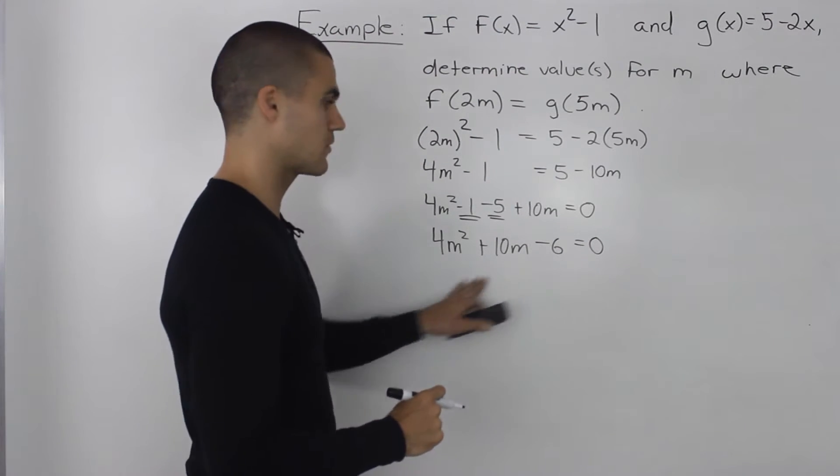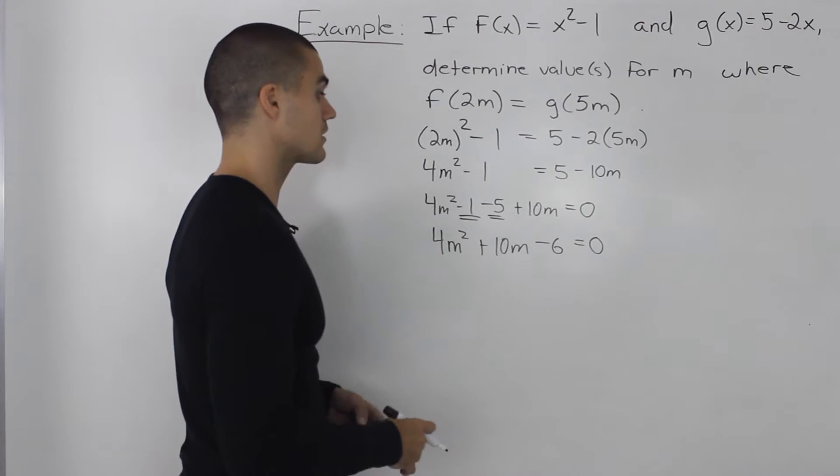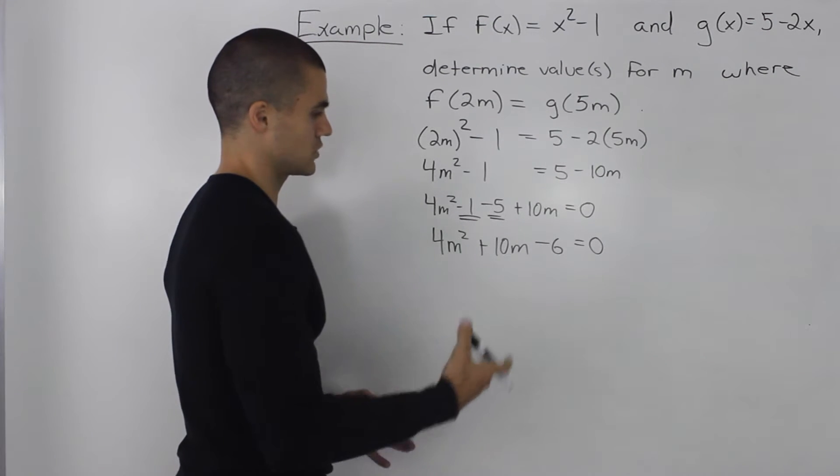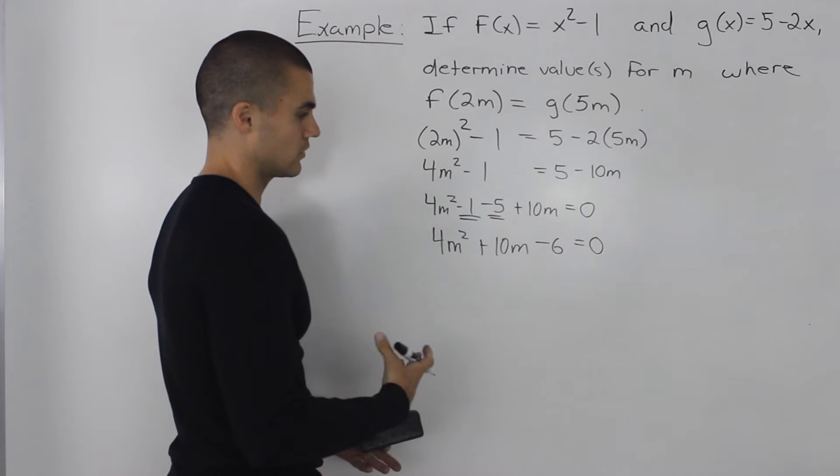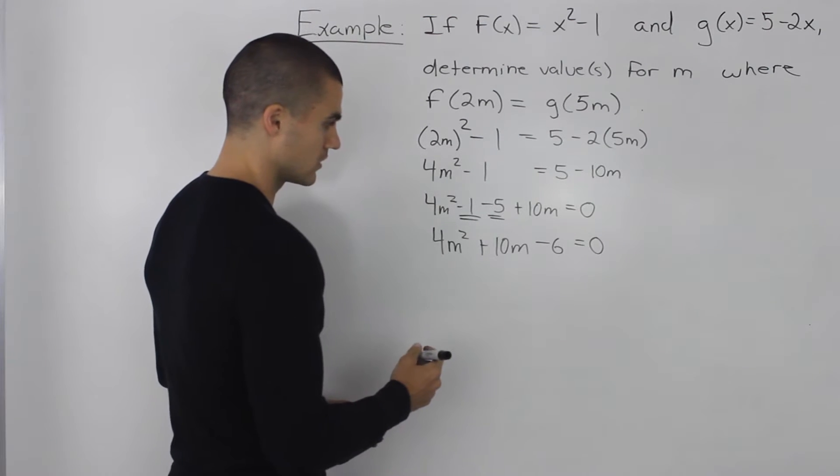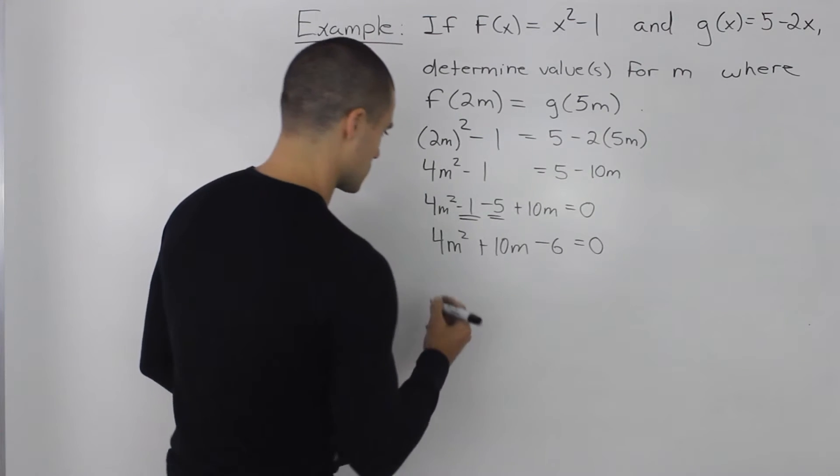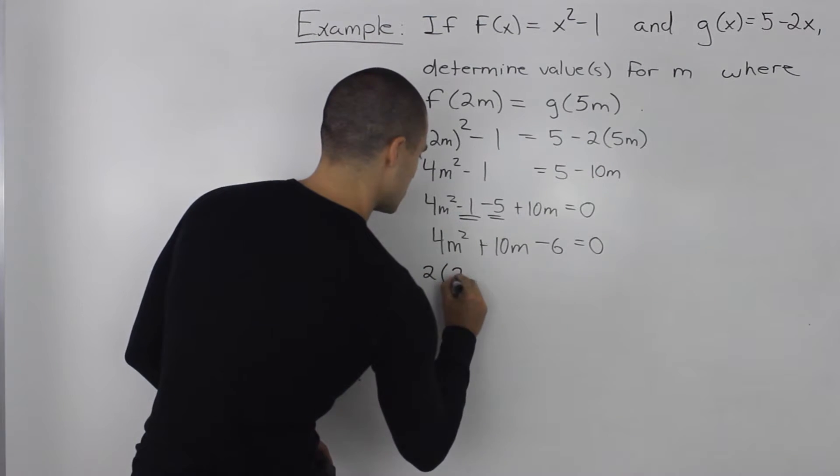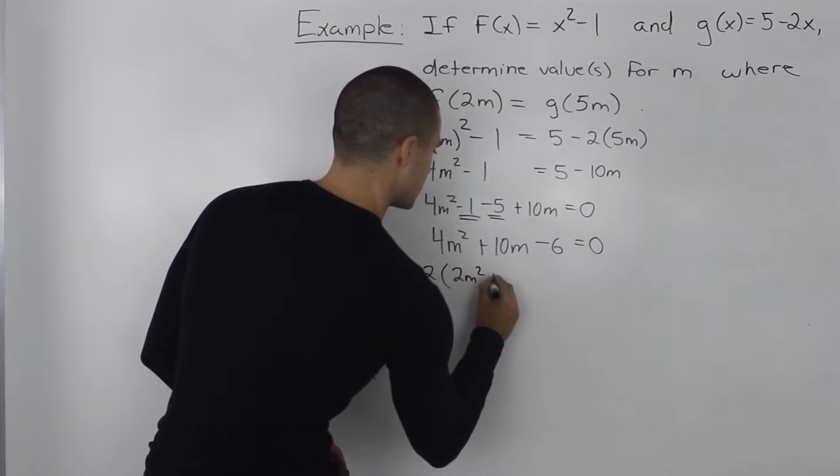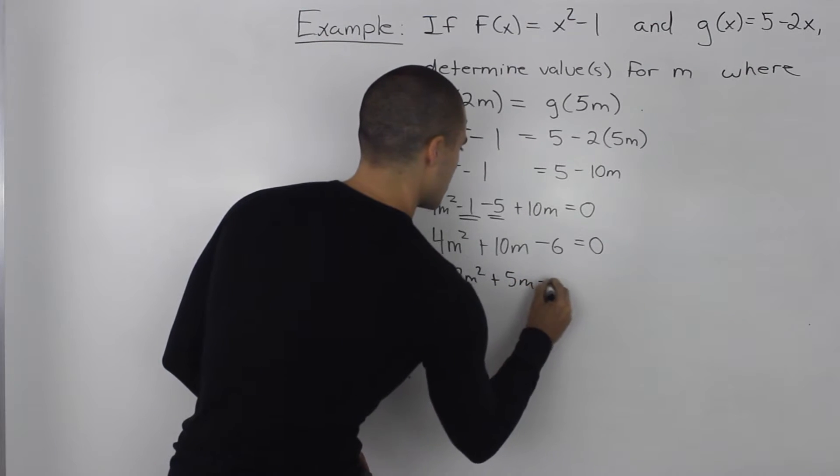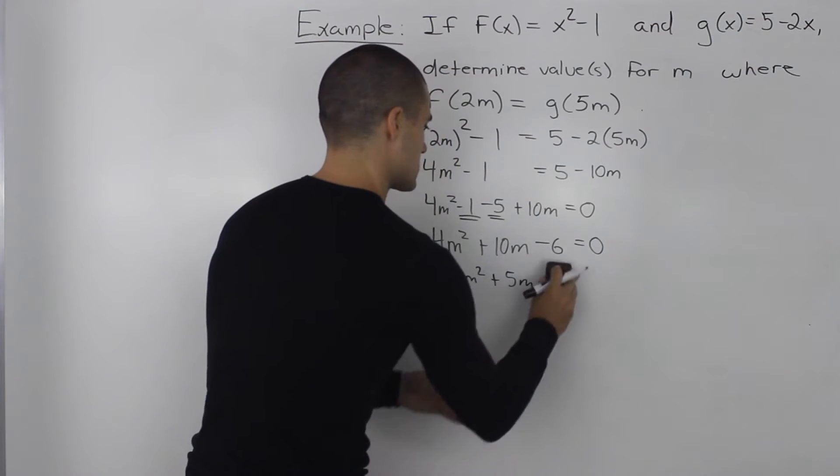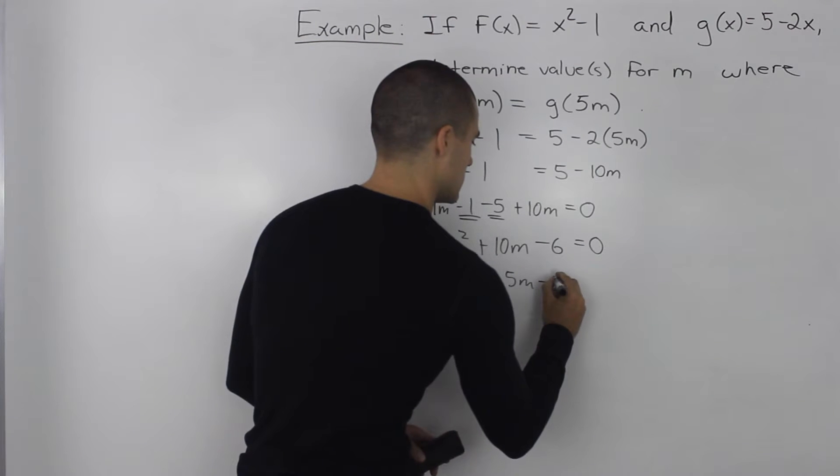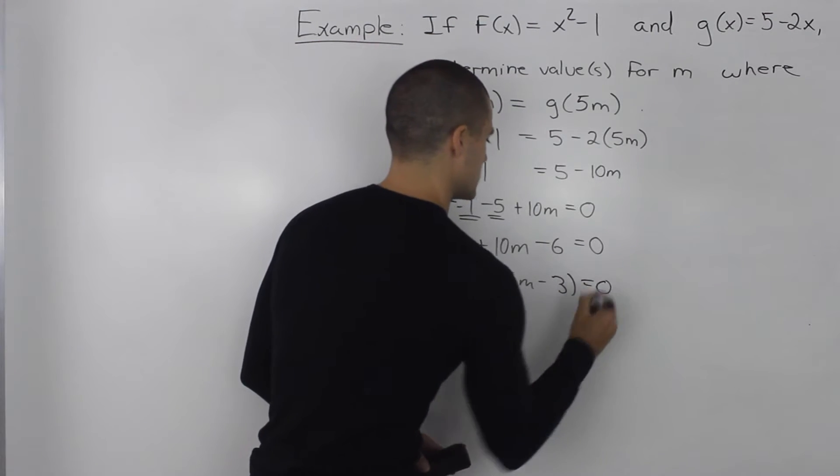And now notice that we have a quadratic equation. So we can use the quadratic formula to solve for it, or we can factor it. And I think this factors smoothly, so we could take out a 2 from everything. So we'd be left with 2m squared plus 5m minus 3 is equal to 0.